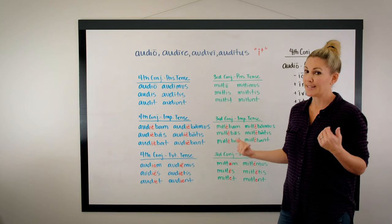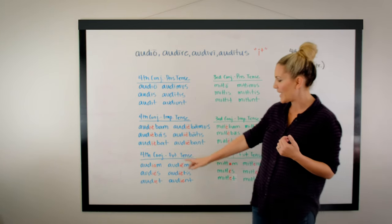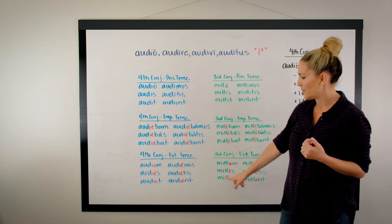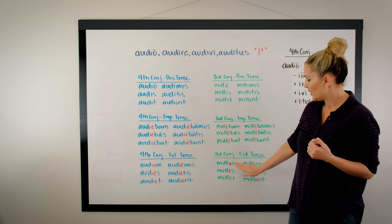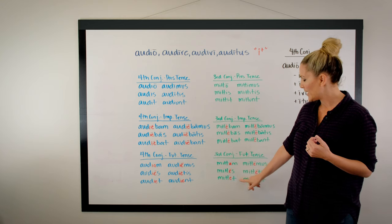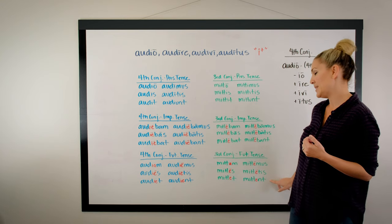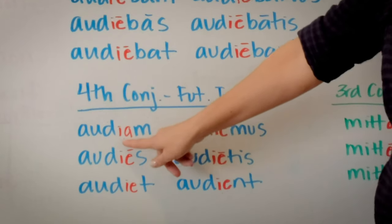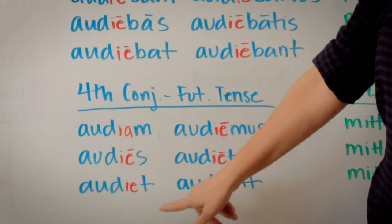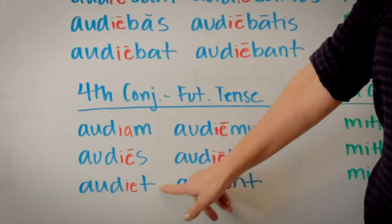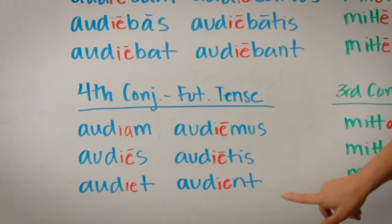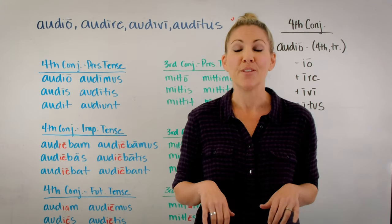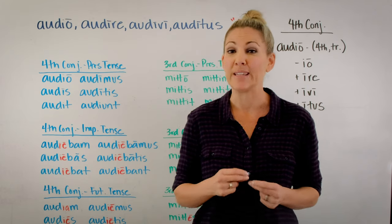In the future tense it's the same thing — we've just added an 'i' to all the conjugating vowels. So where the third conjugation has 'metam, metes, metet, metemus, metetis, metent,' the fourth conjugation has 'audiam, audias, audiet, audiemus, audietis, audient.' If you've done the memory work memorizing the third conjugation endings, the fourth conjugation will be easy.